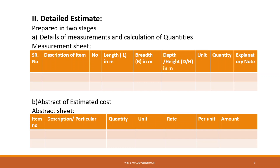Now we look at the Detail Estimate. The preparation of a detail estimate consists of working out quantities of various items of work and then determining the cost of each item. The detail estimate is prepared in two stages: Stage 1 is details of measurements and calculation of quantities; Stage 2 is the abstract or estimated cost, where calculated quantities are multiplied by rates to get the estimated cost for each item.